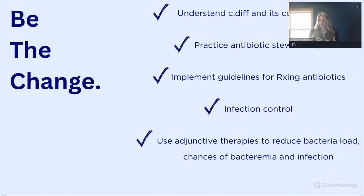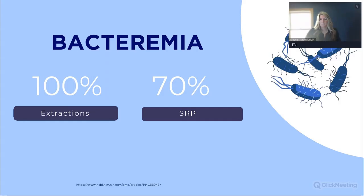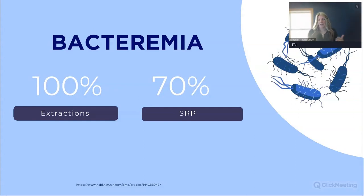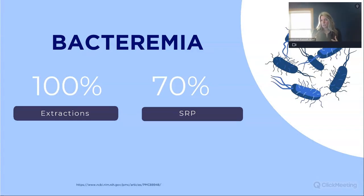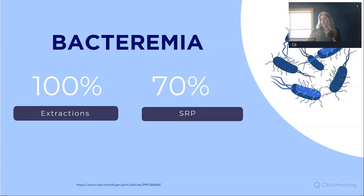Instead of just traditional scaling and root planing or traditional antibiotics, we need to think differently. Different ways of treating patients can actually put patients at risk for bacteremia. For an extraction, there's a 100% chance of bacteremia. Scaling and root planing procedures put patients at a 70% risk for bacteremia. Bacteria in the mouth is bacteria on the brain, bacteria in the heart, bacteria in the bloodstream. It's really important that we reduce bacterial loads overall, starting localized — starting in the mouth.